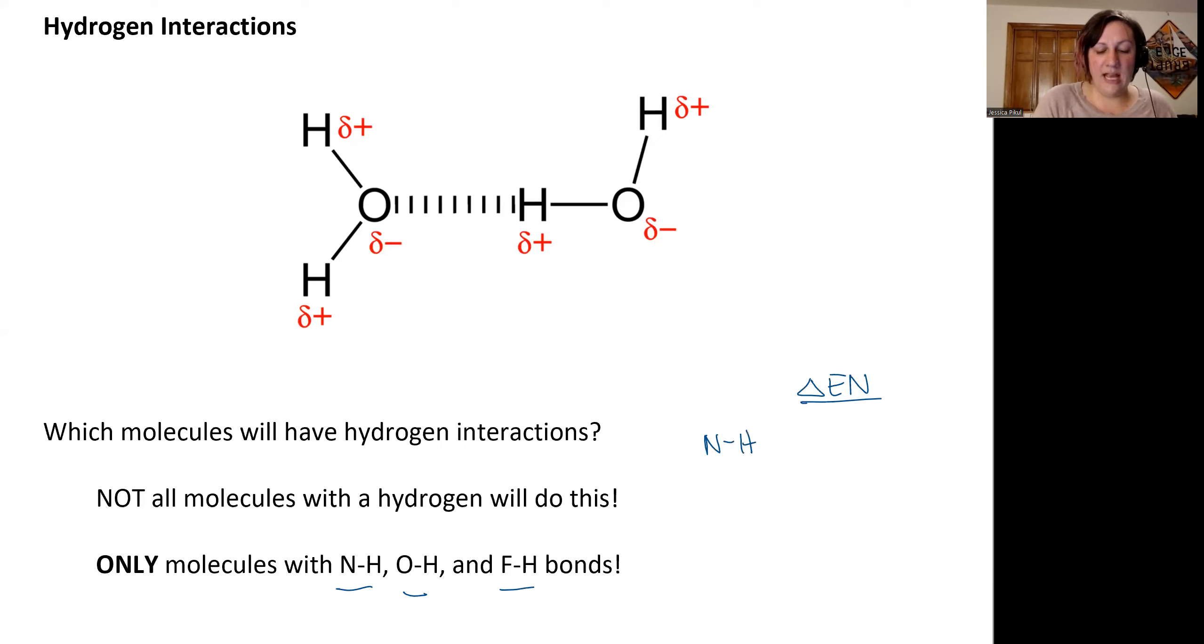If we think about the electronegativity differences of these, nitrogen has an electronegativity value of 3.0, and so this will be a 0.9 electronegativity difference. Oxygen-hydrogen, oxygen is 3.5, and so that is going to be 1.4.